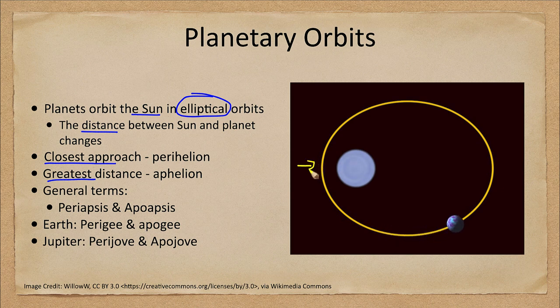That is when the planet passes closest to the sun. On the opposite side, we have aphelion, when the planet is furthest away from the sun.